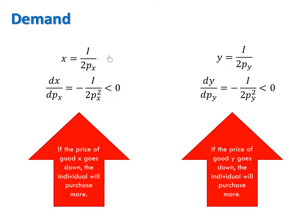In the case where x equals I over 2px, dx/dpx is negative, telling us if the price of x goes down, the individual will purchase more x. Likewise, for good y, dy/dpy is also negative, telling us that if the price of y goes down, the individual will purchase more. Both goods follow the Law of Demand. If we had specific values for income, px and py, then these derivatives would tell us how much each good would change — or how many units each good would change — by as there is a one unit or one dollar change in price.